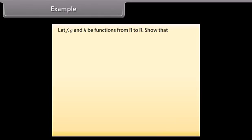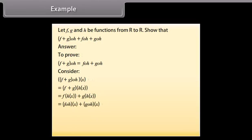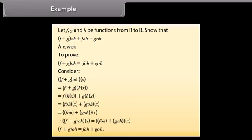Example: Let f, g, and h be functions from R to R. Show that (f + g)∘h = f∘h + g∘h. Answer: To prove (f + g)∘h = f∘h + g∘h. Consider (f + g)∘h(x), which is equal to (f + g)(h(x)). On solving we get (f + g)∘h = f∘h + g∘h. Hence proved.